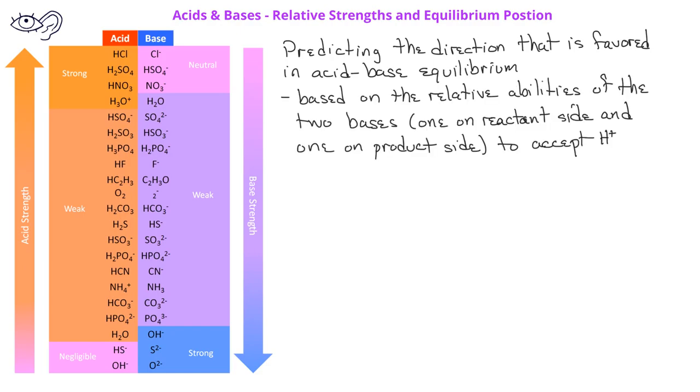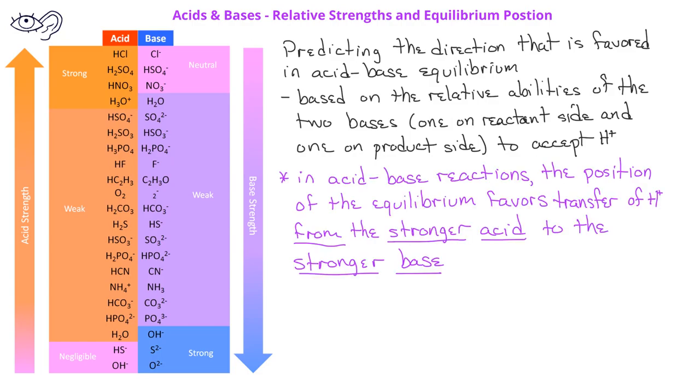In acid-base reactions, the position of the equilibrium favors the transfer of a hydrogen ion from the stronger acid to the stronger base, and they will form the weaker acid and the weaker base. This means that there will be more weak acid and weak base present at equilibrium.